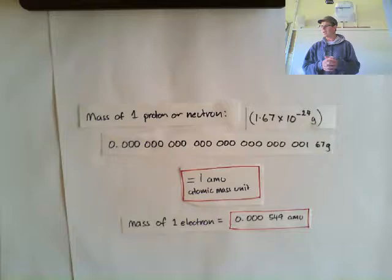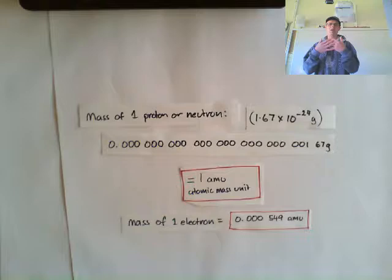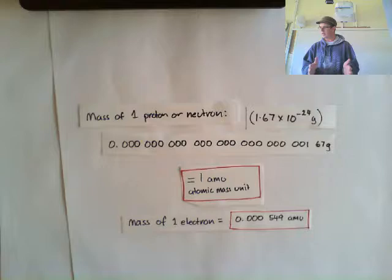We don't worry about the electrons when talking about the mass of an atom because they weigh so little. It's like getting on the scales to weigh yourself — you wouldn't remove your earrings or your ring because they're so small they don't make any difference to the weight anyway. That's how we look at electrons: they're so small in weight that they just don't make any difference to the mass of an atom. So when talking about mass, we consider protons and neutrons only.